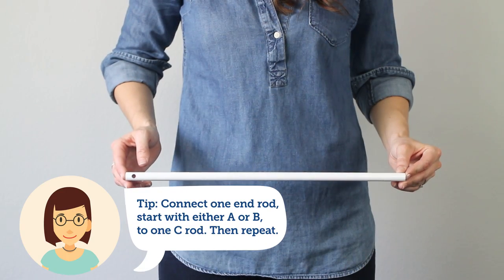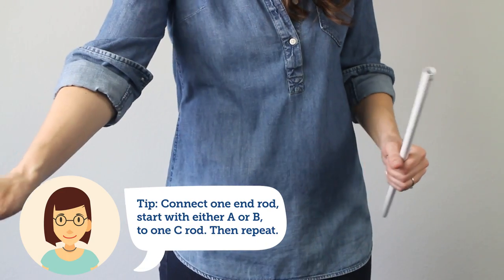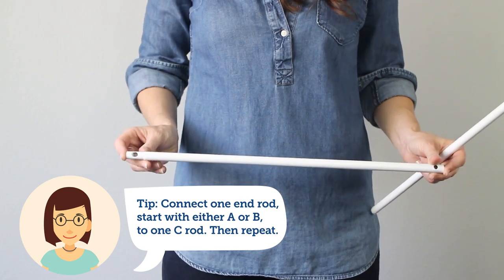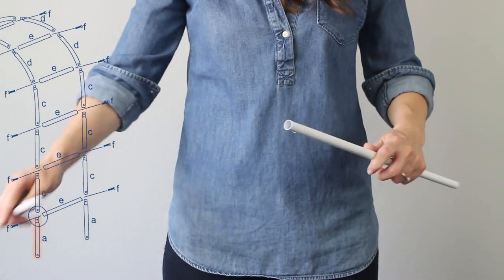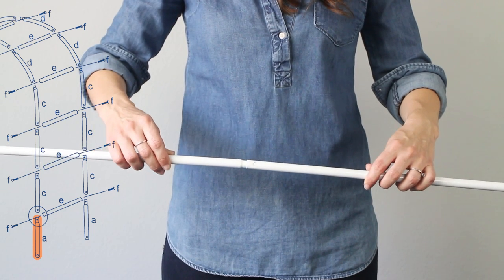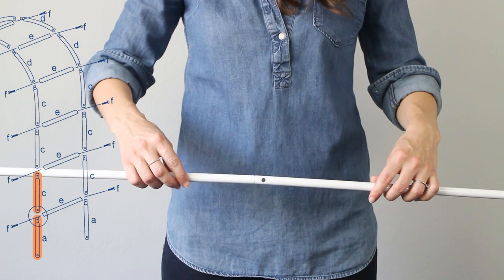So basically from the bottom you're going to connect one end rod and you're going to start with either A or B. You're going to be connecting it to a C rod and then just repeating. That's how you're going to get those two legs.